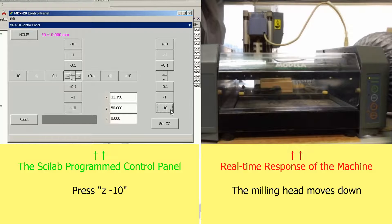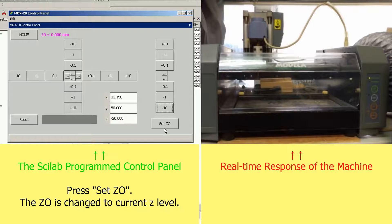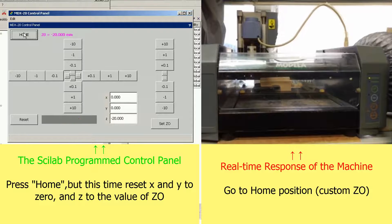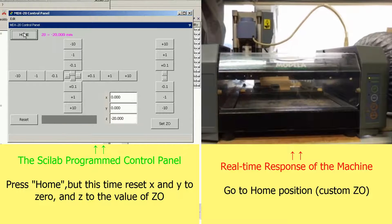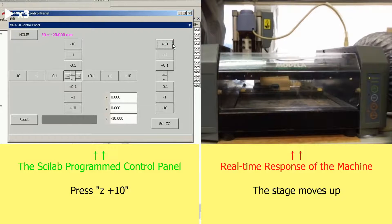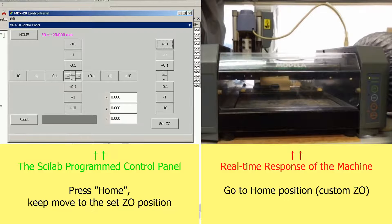To set a custom set zero level, move the set position to your target level and then press set zero. You can find the current value of set zero at the top left corner. Press the home button. This time the tool will move to the home position level at the custom set zero position rather than the zero zero zero position.